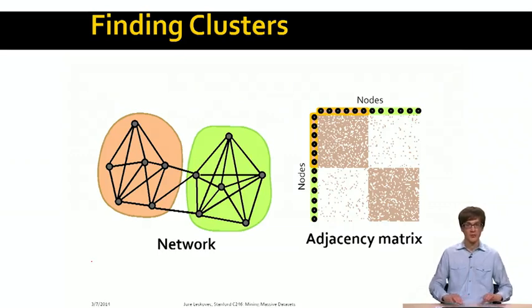And the way we would like to do this is basically we would like to, in the simplest way, split the graph into two pieces. And we would like to split the graph into two pieces in such a way that each of the two pieces has lots of connections between the members of each piece, and then a few connections crossing the two pieces.